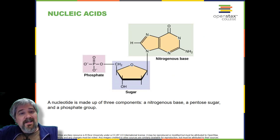Nucleic acids. Nucleic acids are key macromolecules in the continuity of life. They carry the genetic blueprint of a cell and carry instructions for the functioning of the cell. The two main types of nucleic acids are deoxyribonucleic acid (DNA) and ribonucleic acid (RNA). DNA is the genetic material found in all living organisms, ranging from single-celled bacteria to multicellular mammals. The other type of nucleic acid, RNA, is mostly involved in protein synthesis. The DNA molecules never leave the nucleus, but instead use an RNA intermediary to communicate with the rest of the cell. Other types of RNA are also involved in protein synthesis and its regulation.